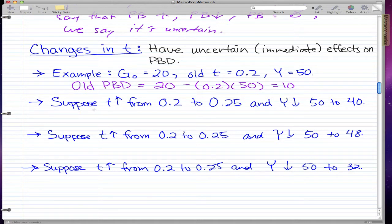Suppose that the tax rate increased from 0.2 to 0.25, and total income decreased from 50 to 40. Let's calculate our new PBD. The new PBD is equal to 20 minus 0.25 times 40.